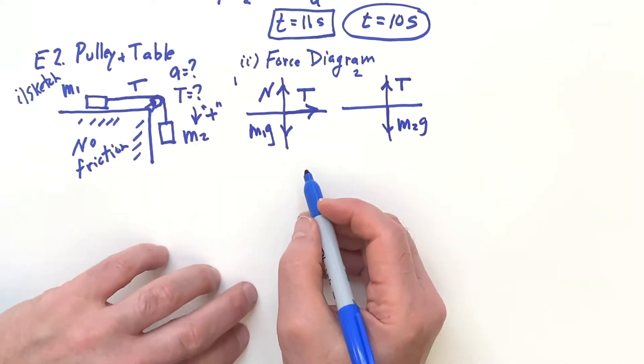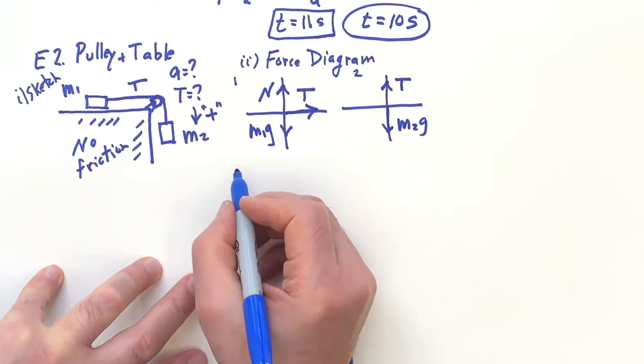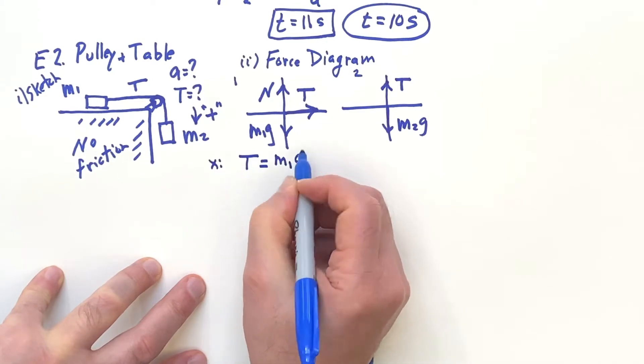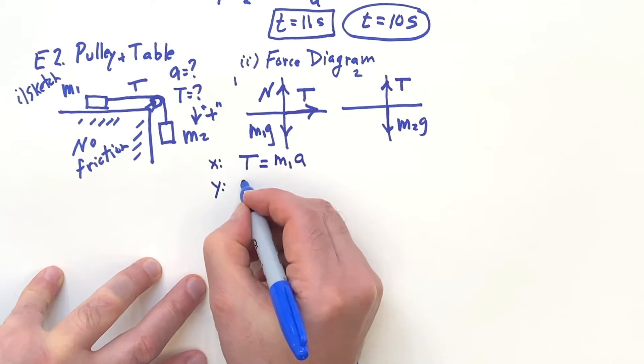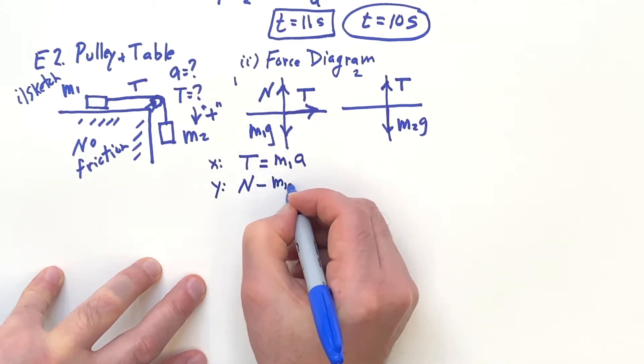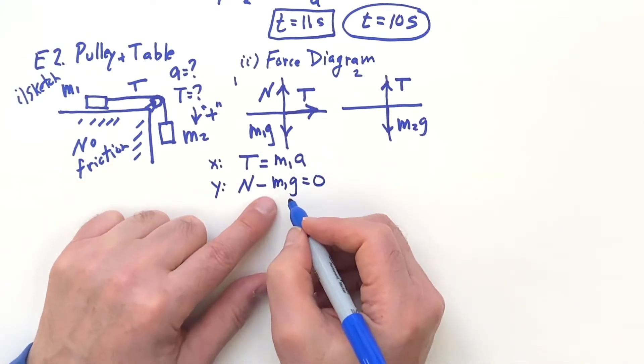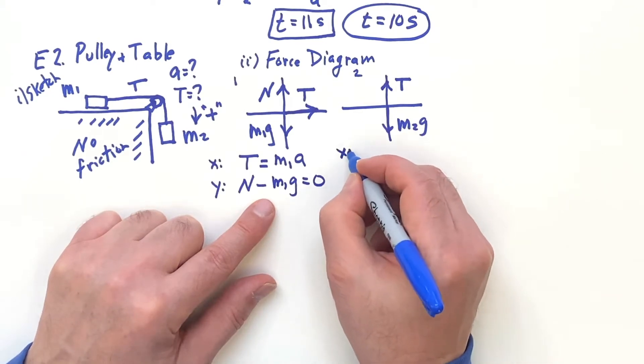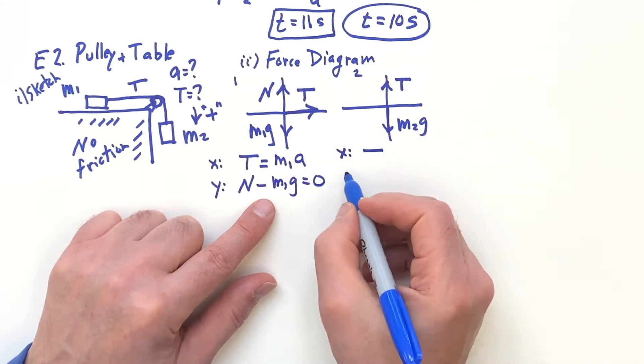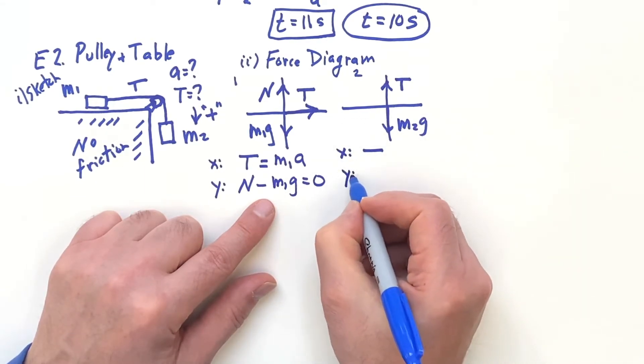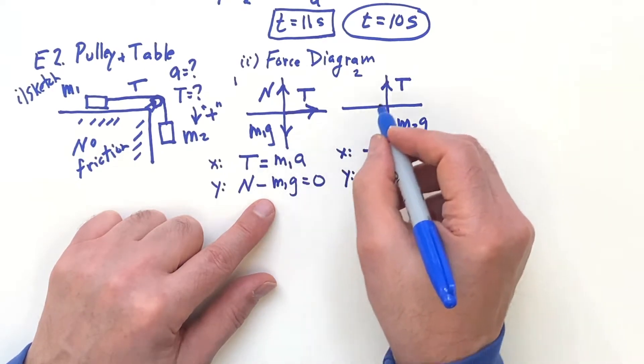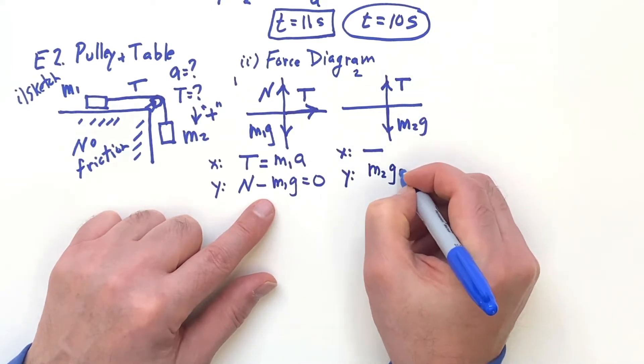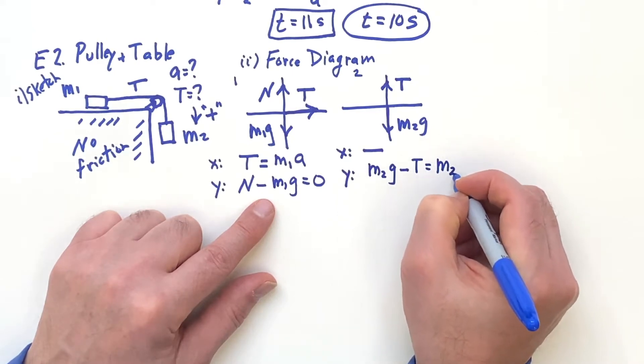So now we write down the equations. For the X direction T equals M one A. That's all you have there. And for the Y you have N going up minus M one G equals zero. Not going to really need that equation, but we're at the end anyway. And then over here for the X, you basically had nothing. There's no X forces. And then for the Y we have to be consistent. Down is plus. So this is one to the right. Plus goes with this down. So M two G minus T is M two A.